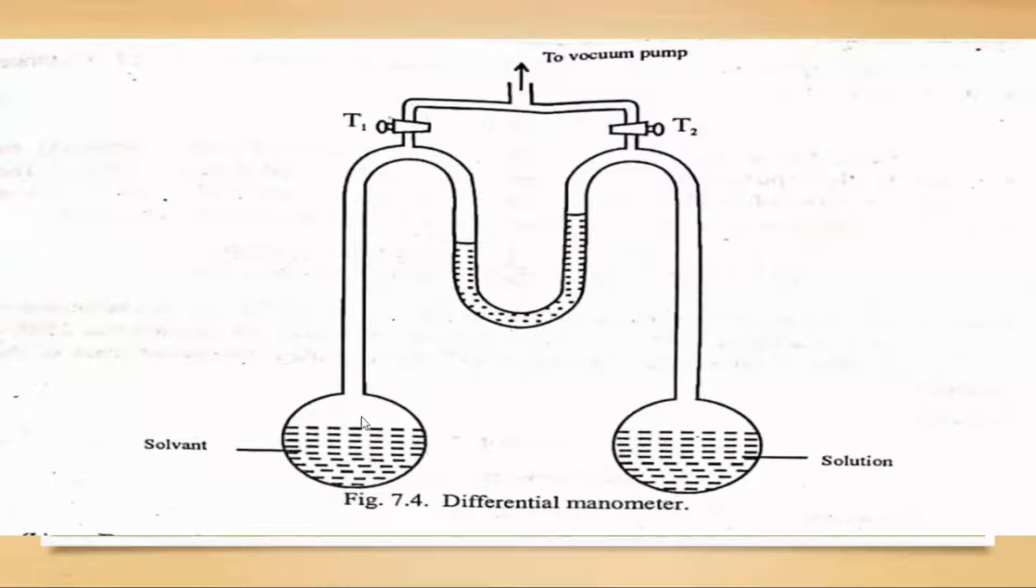Now the solvent will produce its vapors and the solution will also produce its vapors. Now whichever has greater vapor pressure, which produces more vapors, its pressure will be greater. Whichever produces less, its pressure will be less. Therefore initially the mercury levels are equal, but due to the greater pressure of the solvent, this will go down and this will go up.